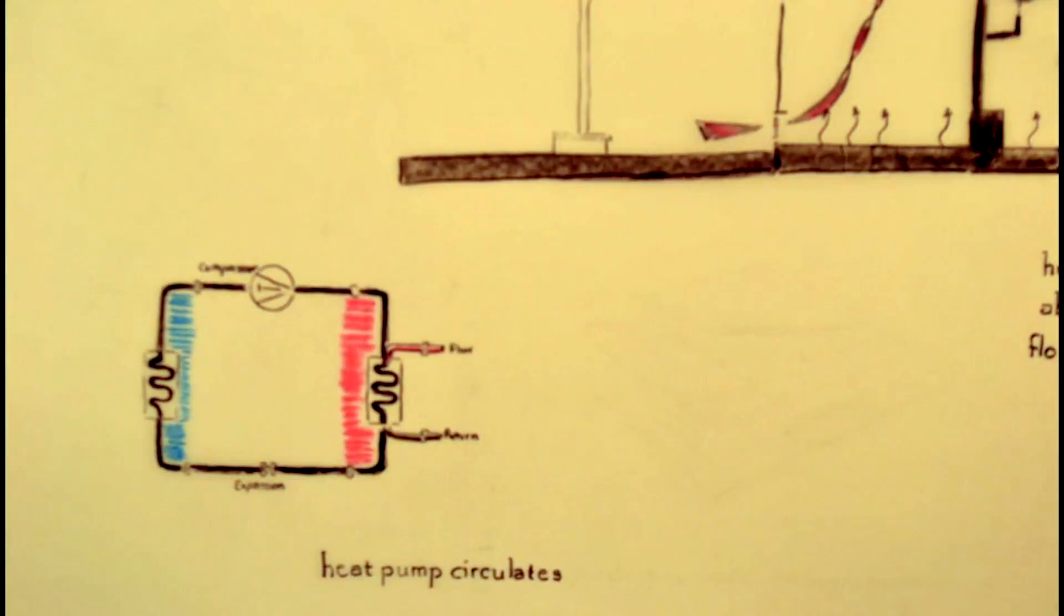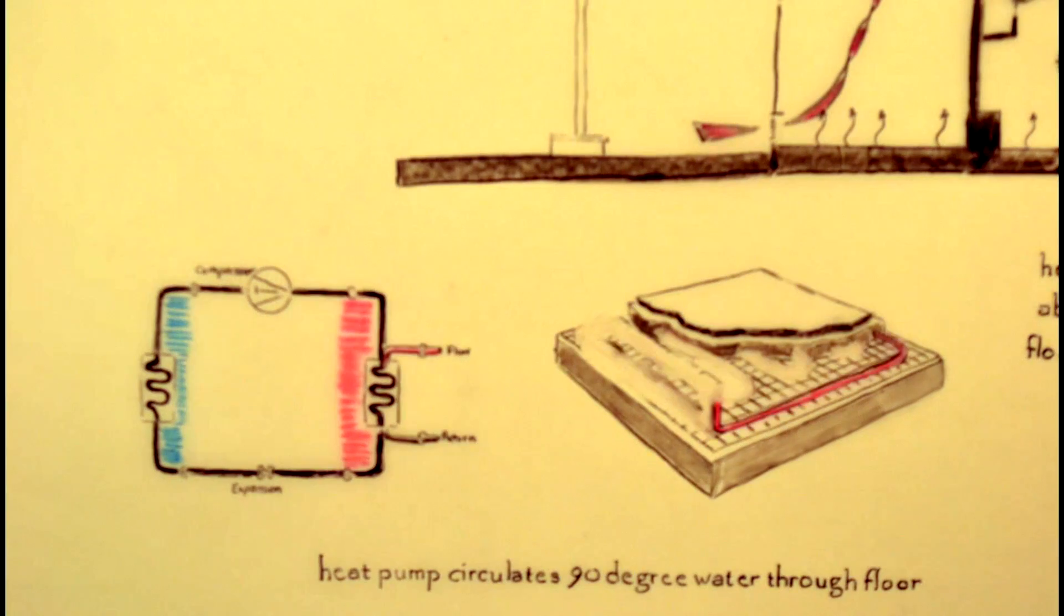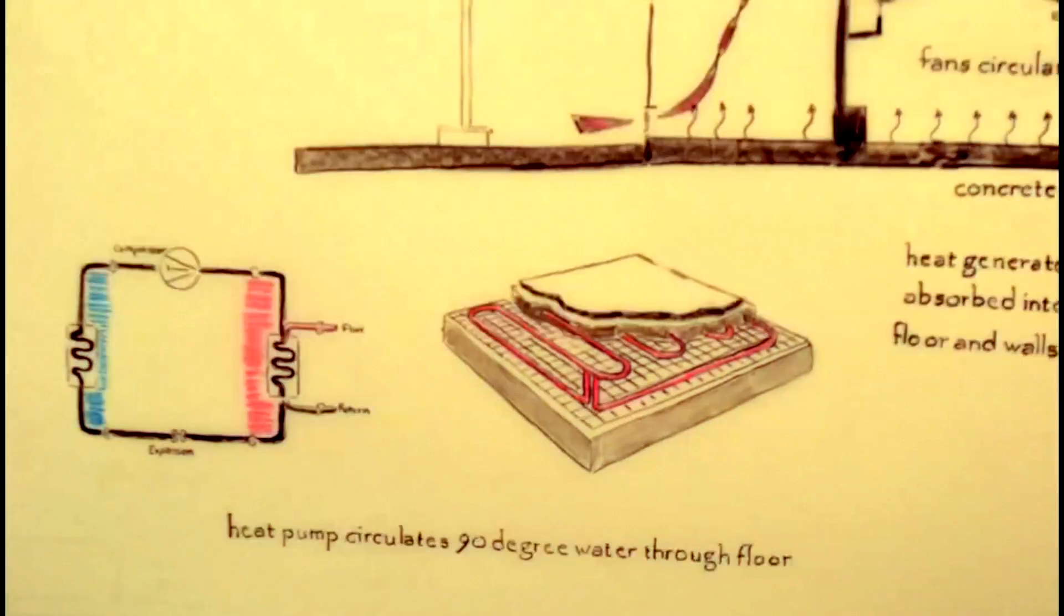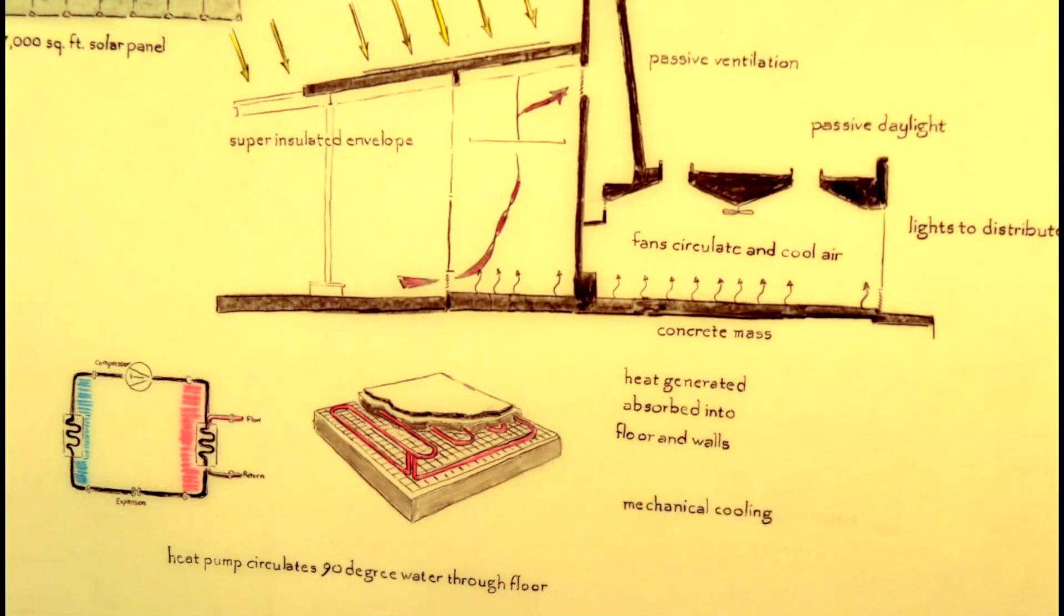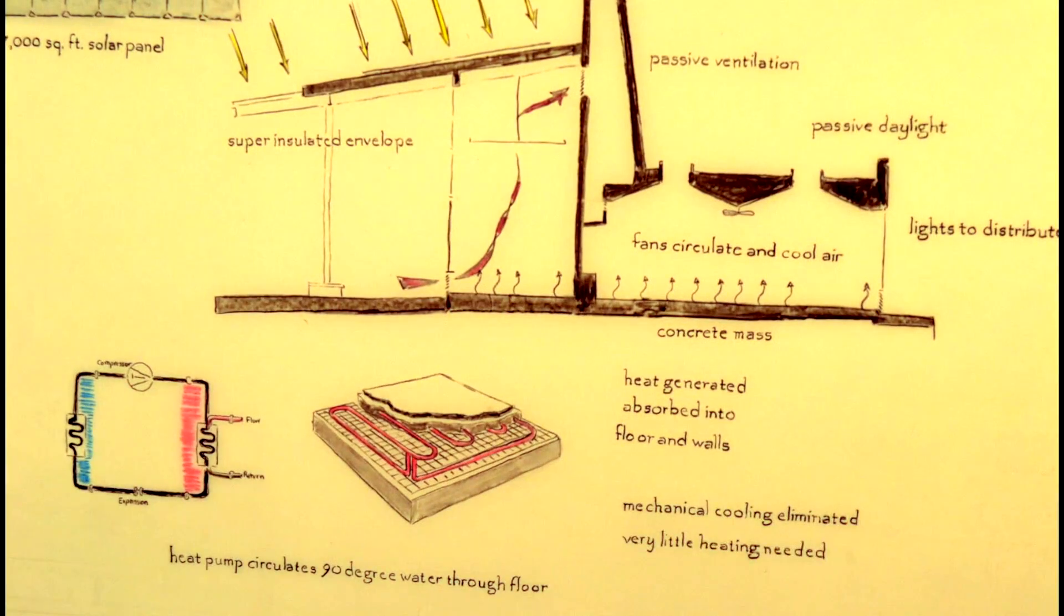The heat pump circulates water at 90 degrees Fahrenheit through pipes embedded in the exposed concrete slab. Under these combined systems, all mechanical cooling is eliminated and very little heating is needed.